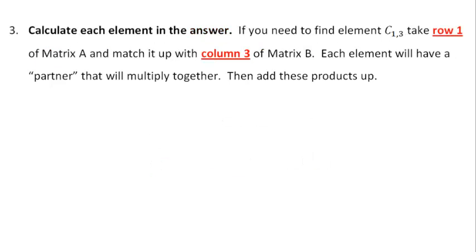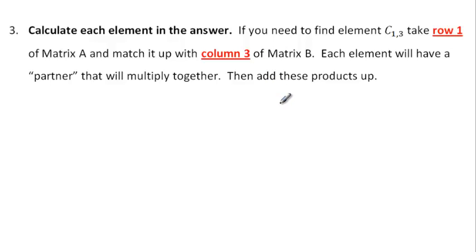The last step is to calculate each individual element of your answer. You'll know how many elements there are from the dimensions. If we want to find element C13 — that's row one, column three — you take row one of the first matrix and column three of the second matrix, and you match them up. This step probably won't make much sense yet, so we'll go through an example and then come back and re-read this — it will make more sense.